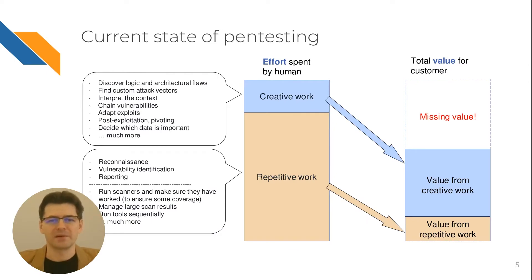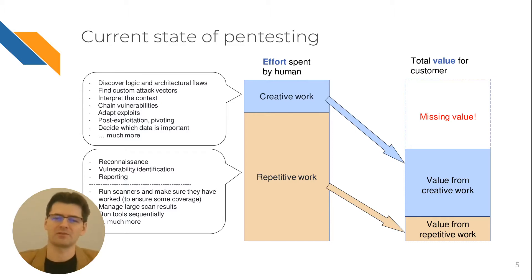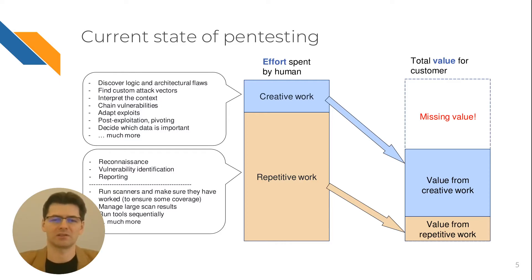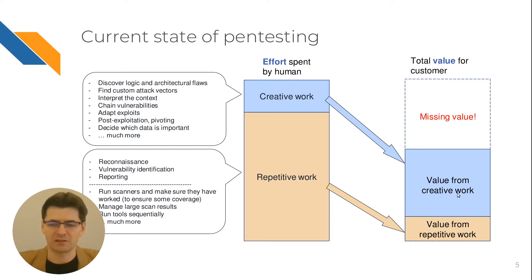Let's see why this was necessary. The current state of pen testing the way we see it right now is described in this picture. Imagine that your customer has hired you to do a pen test and you have a limited timeframe for this engagement. What we have seen is that most pen testers spend a pretty significant amount of this time doing repetitive work — basically doing reconnaissance, vulnerability identification, running scanners, managing them to ensure that they have finished and covered all the attack space, managing large results and so on. This work is necessary but we believe that it can be automated.